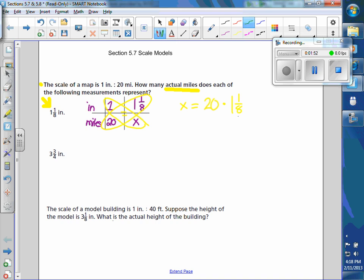And when we do fraction multiplication, this is 8 times 1 is 8 plus 1 is 9, so it's 20 times 9 eighths. So when I multiply fractions, I can simplify along the way, so 4 goes into both 8 and 20, so 4 goes into 8 twice and 20 five times, so now I can multiply and I get 45 over 2, and 1 times 2 is 2, so this is 22 and a half for x. So 1 and 1 eighth inches represents 22 and a half miles in actuality.